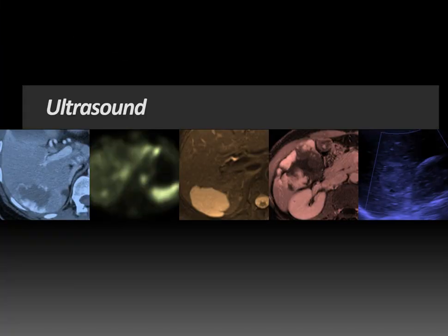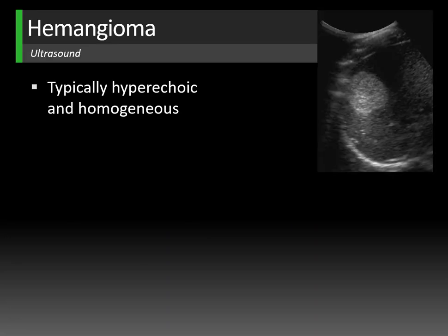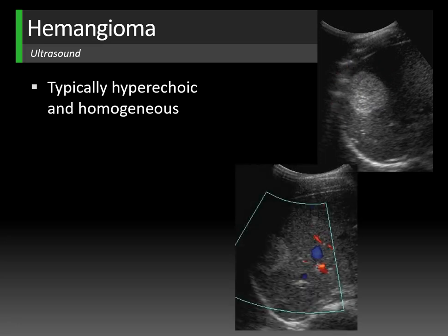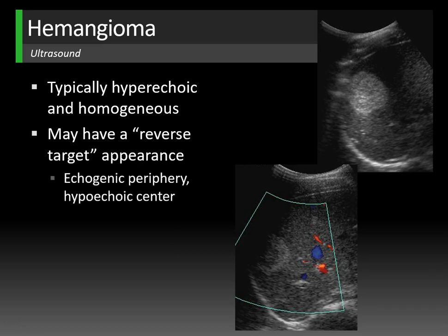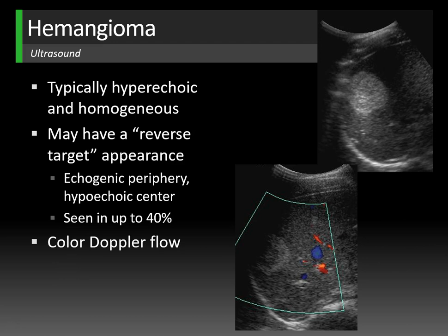On ultrasound, hemangiomas are usually echogenic and homogeneous — a right hepatic hemangioma appearing diffusely homogeneously hyperechoic with slightly lobulated margins. Another pattern, seen in about 40% of hemangiomas, is the reverse target appearance: an echogenic periphery and hypoechoic to isoechoic center. On color Doppler imaging, there's usually no detectable flow since hemangiomas are often avascular on ultrasound.